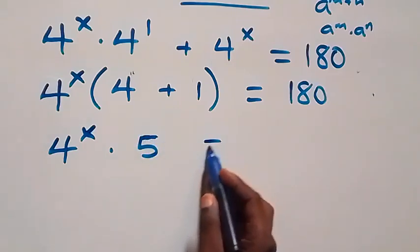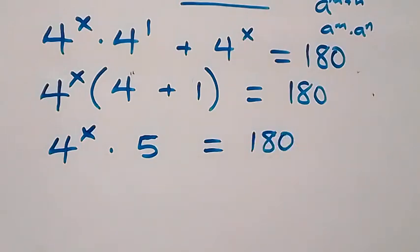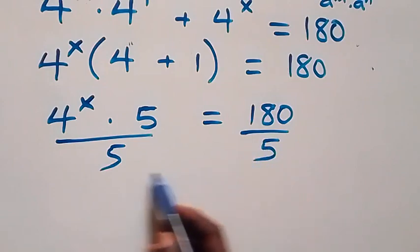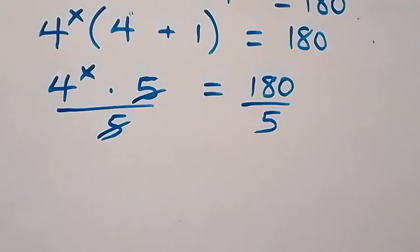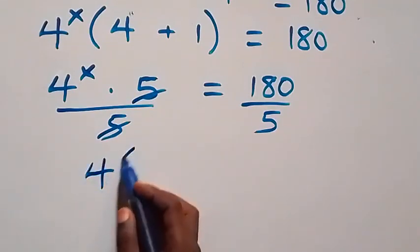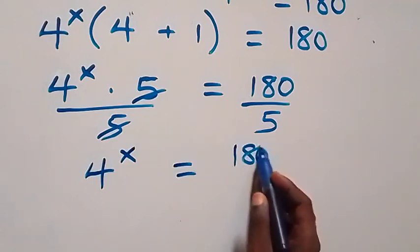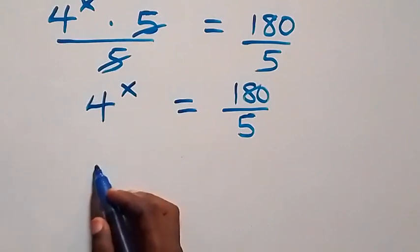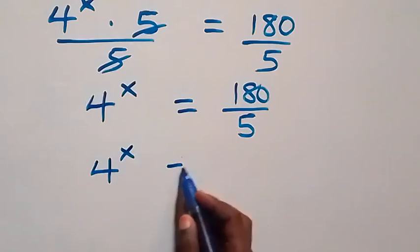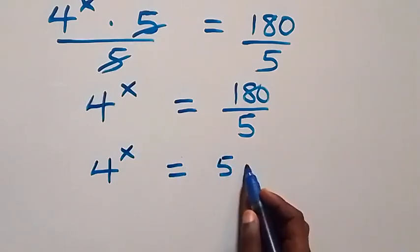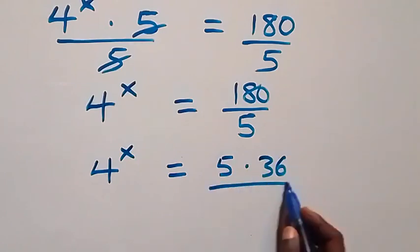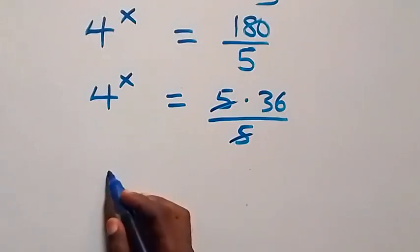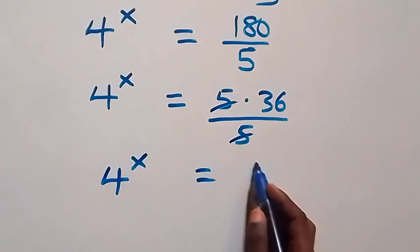Four raised to power x times five equals 180. At the next step we divide both sides by five. Five cancels each other on this side and we are left with four raised to power x equals 180 over five. We can write 180 as five times 36, so five cancels and this becomes four raised to power x equals 36.